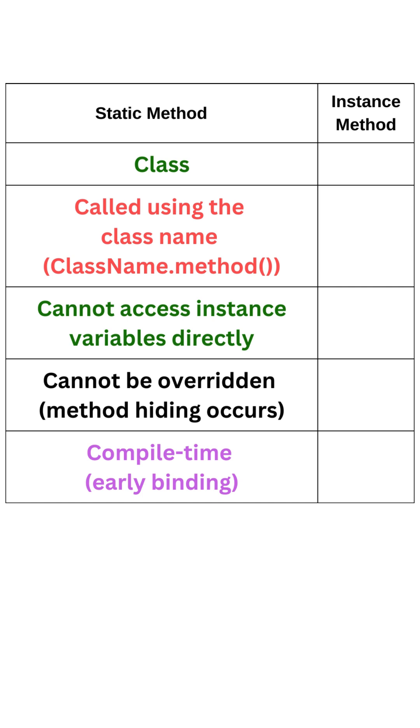Static method cannot access instance variables directly. Static method cannot be overridden. Only method hiding occurs, and they use compile time binding.